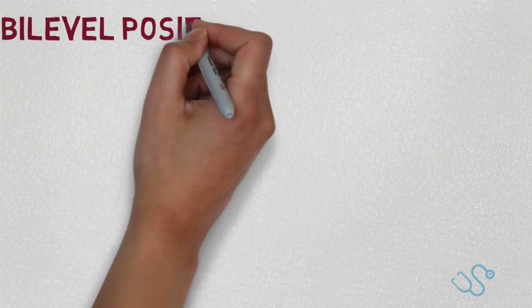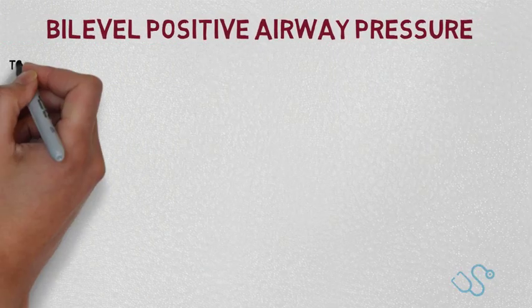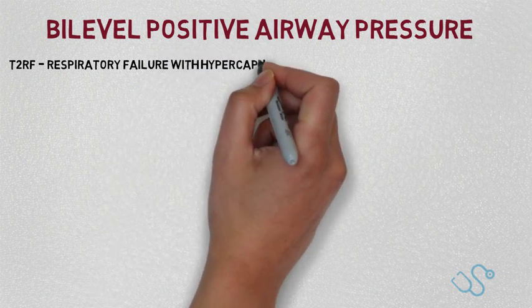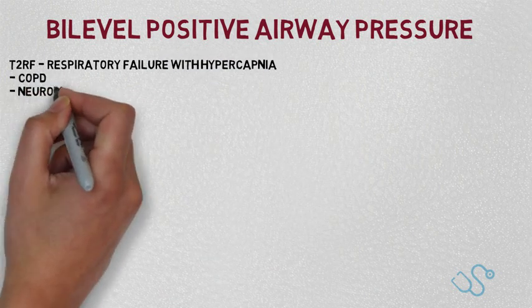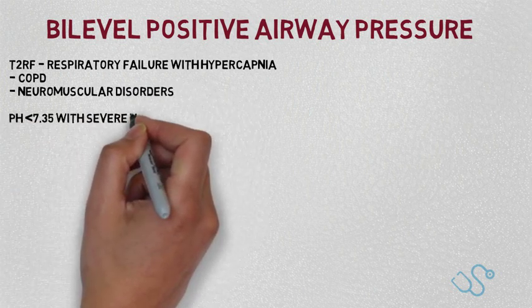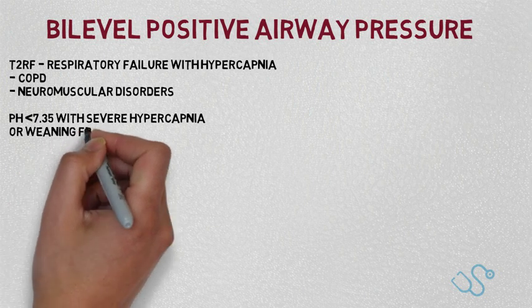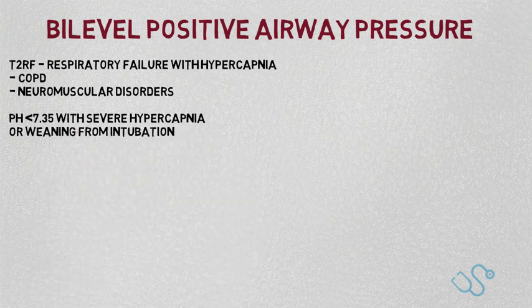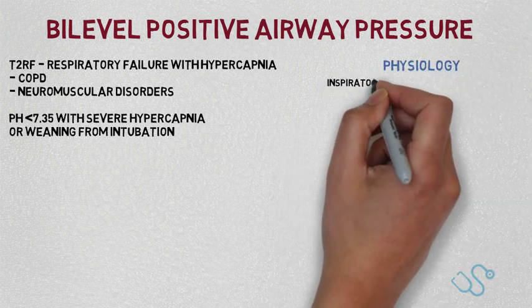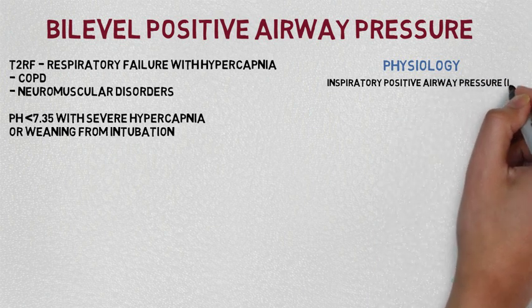Let's move on to BiPAP, which some places commonly refer to as NIV. This is for respiratory failure with hypercapnia — i.e., type 2 respiratory failure. Most commonly it's seen in people with COPD or a neurological disorder causing ventilation difficulties, such as motor neurone disease. The indications are severe respiratory failure with a high CO2 and a low pH despite optimal medical management, or people who have been weaned from the process of being intubated. The key physiological difference is that there are two pressures: an inspiratory pressure, or IPAP, and an expiratory positive airway pressure, also known as EPAP.